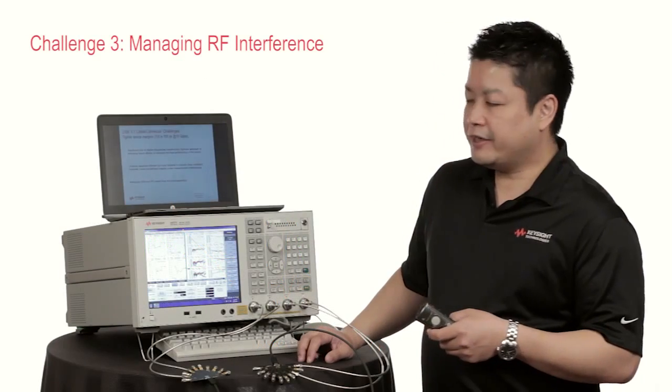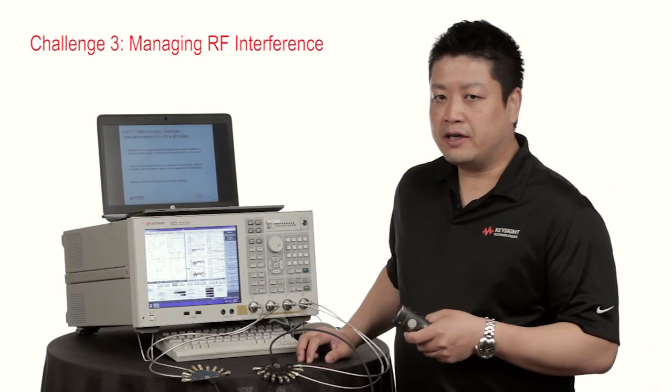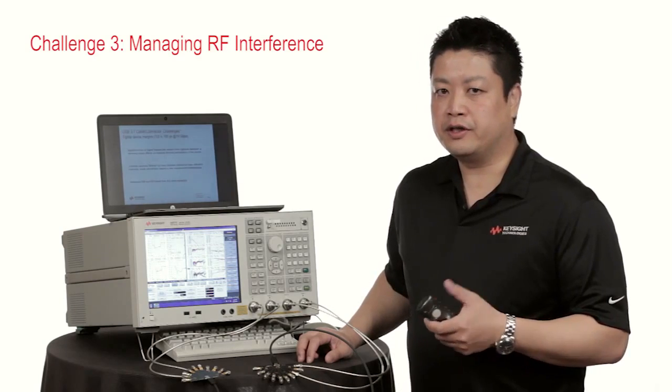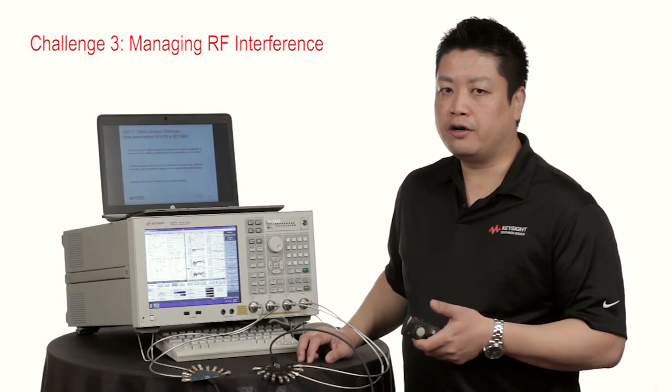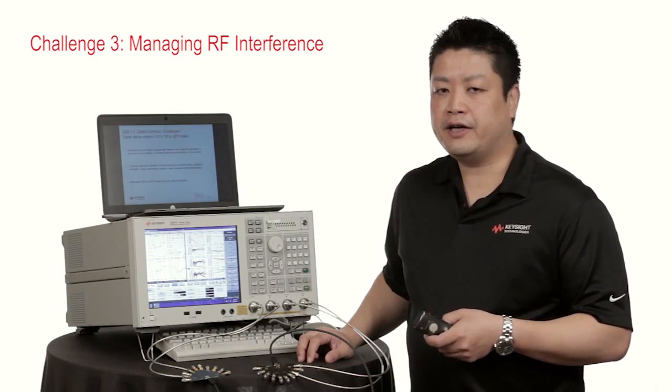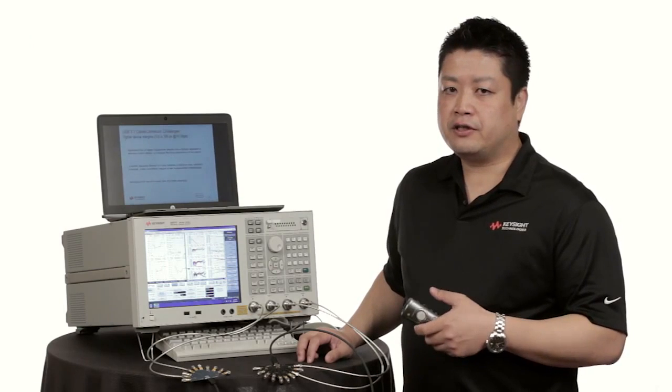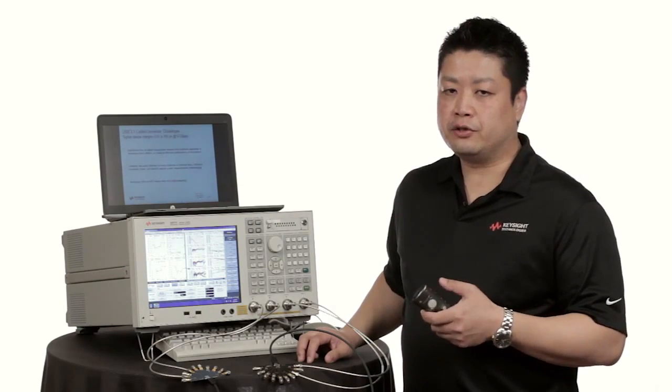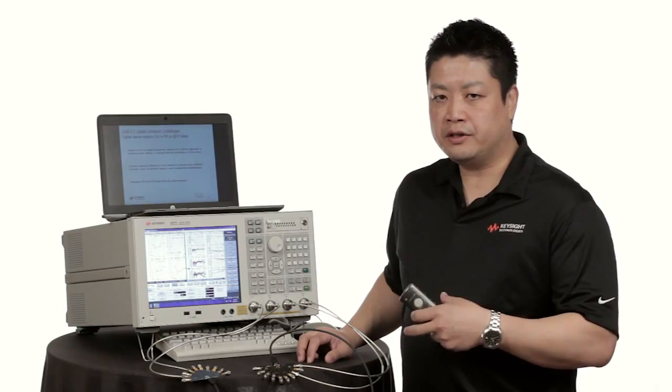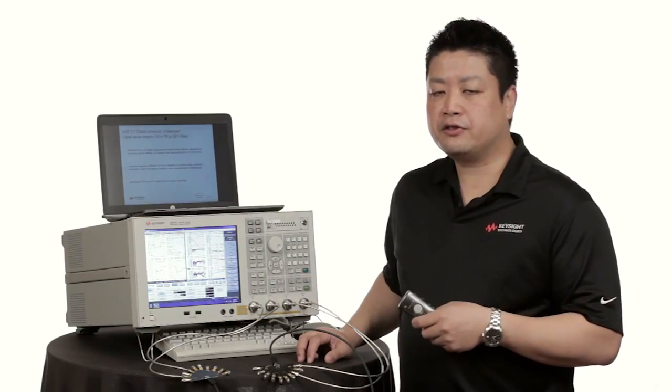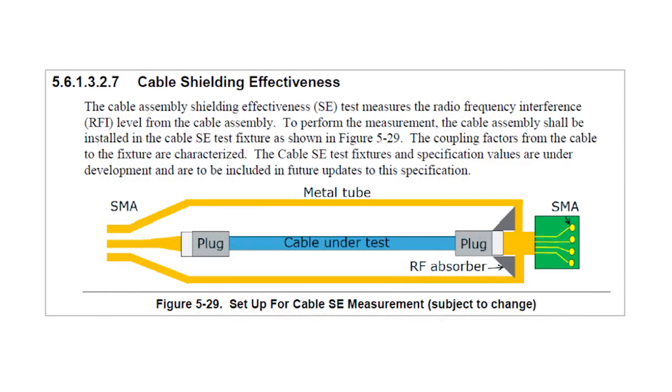The third challenge is an issue we've encountered with USB 3.0. There were issues reported for RF interference and there has been modifications done to the USB 3.1 connector to ensure sufficient grounding as well as additions to the test specification to ensure that RF interference is mitigated correctly.